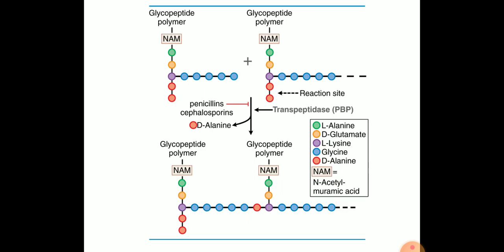A pentapeptide is attached to the glycan. The rigid peptidoglycan cell wall is formed by cross-linking of the glycan chains by peptide chains to form continuous two-dimensional sheets. The initial stages of peptidoglycan synthesis takes place in the cytoplasm.